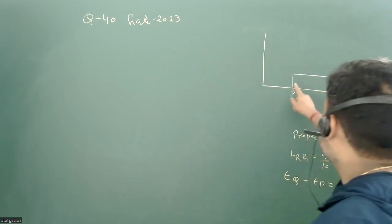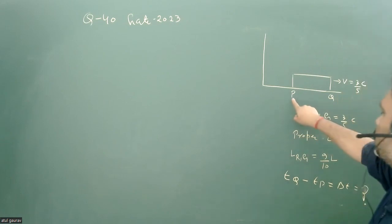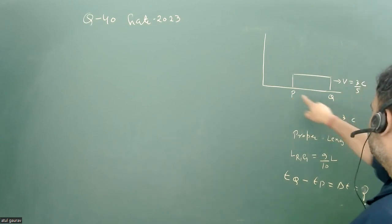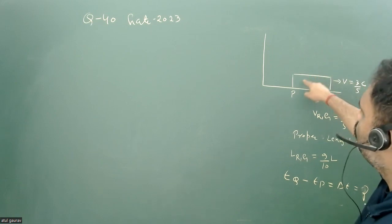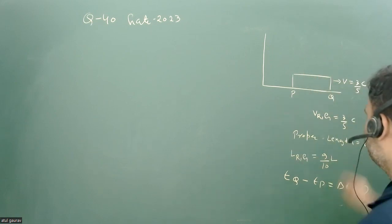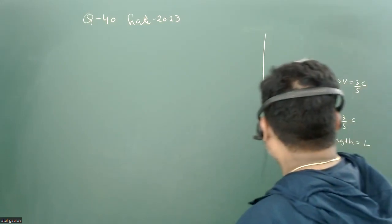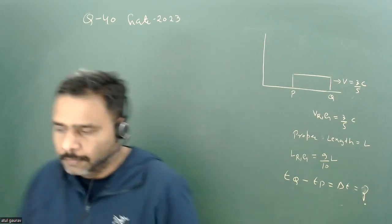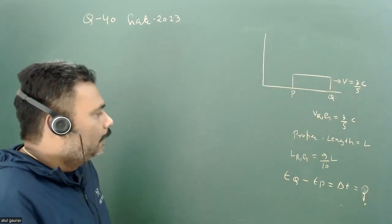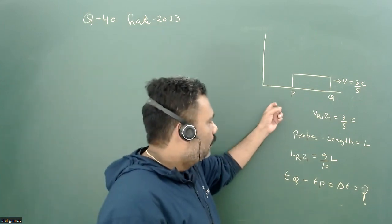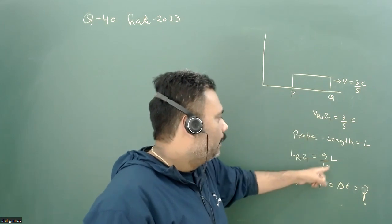In this problem, there is a rod of proper length l with two points P and Q. The distance between them is l with respect to the observer at rest relative to the rod — this is the proper length. The rod is moving with speed 3/5 c with respect to the ground, towards the right, and an observer on the ground will see that this length is 9/10 l.